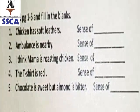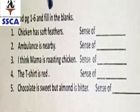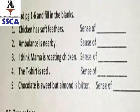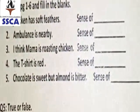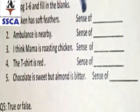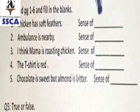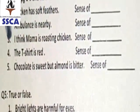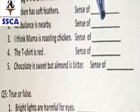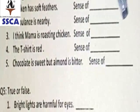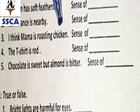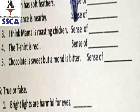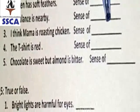Question number 4: read page number 1 to 6 and fill in the blanks. The first one is: Chicken has soft feathers — I can feel it with the sense of blank; write the correct sense. The second one is: Ambulance is nearby — I knew it with the help of our sense of blank; fill this blank with the right sense. The third is: I think Mama is roasting chicken — I can recognize it with the sense of blank; think about it and put a suitable sense here.